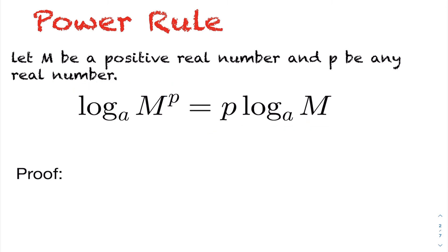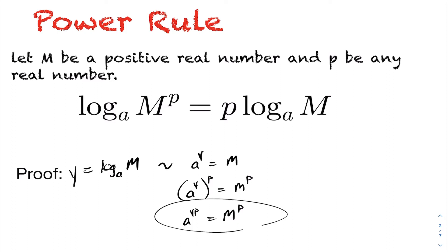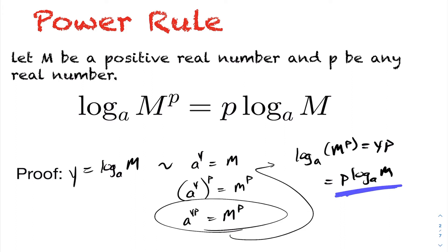To prove this, let y equal log base a of m. In exponential form, a to the y equals m. We raise each side to the power of p. Observing this in exponential form and converting to logarithmic form, what we raise base a to in order to get m to the power of p equals y times p. But y times p is precisely p times log base a of m, completing the proof of the power rule.